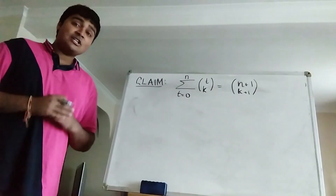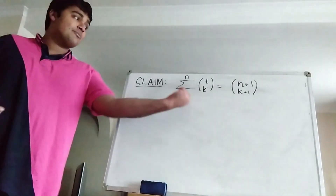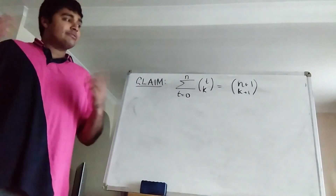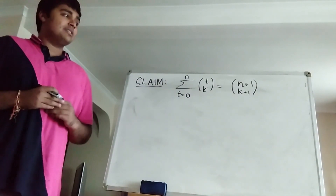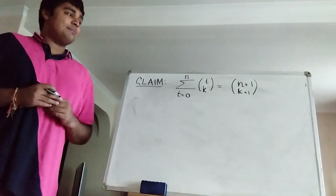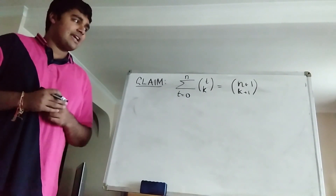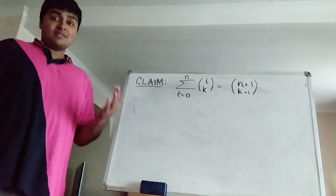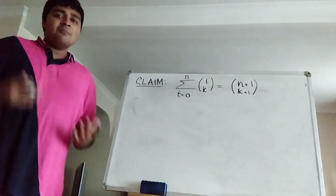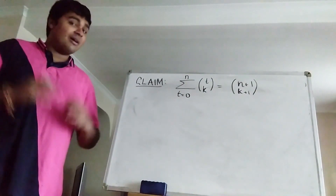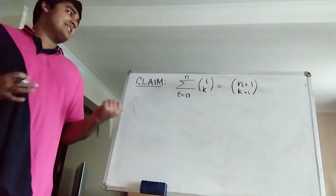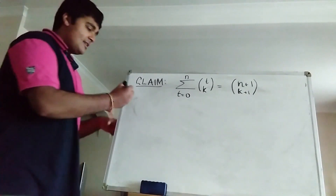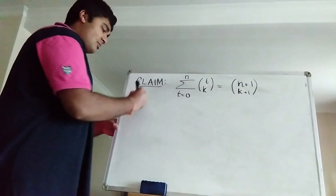The first thing I'm going to do is make a claim: the sum from t equals 0 to n of t choose k is equal to n plus 1 choose k plus 1, for some positive integer k. To see that this is true, we could prove it by induction, but to keep with the theme of this video, I'm going to use combinatorics to prove it instead.